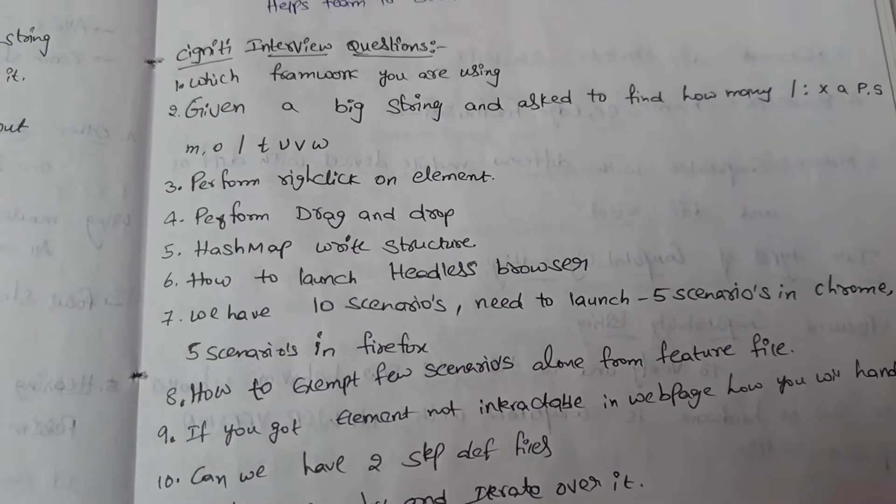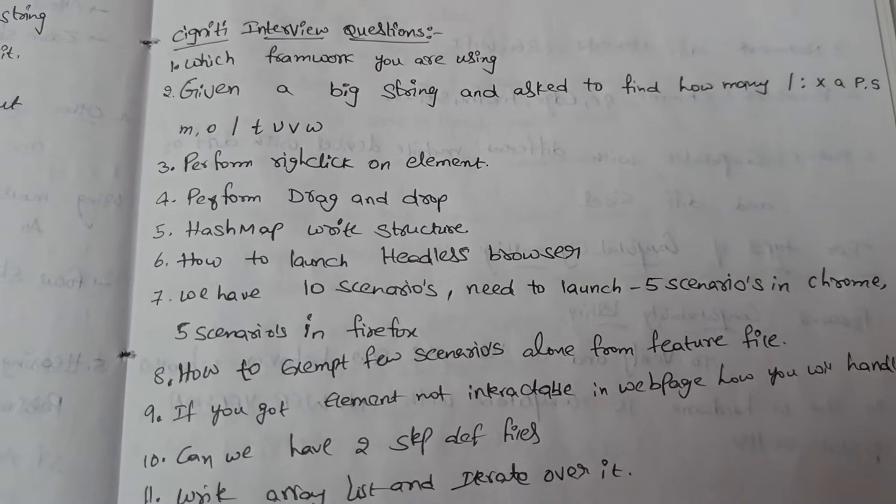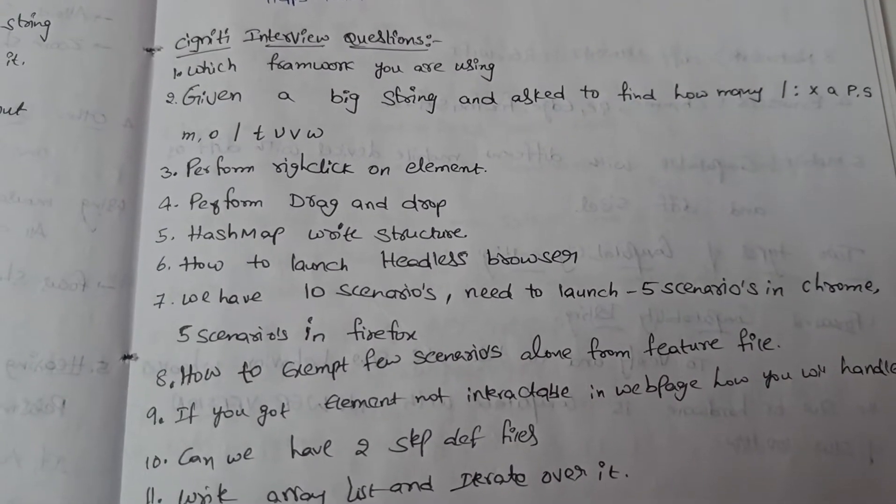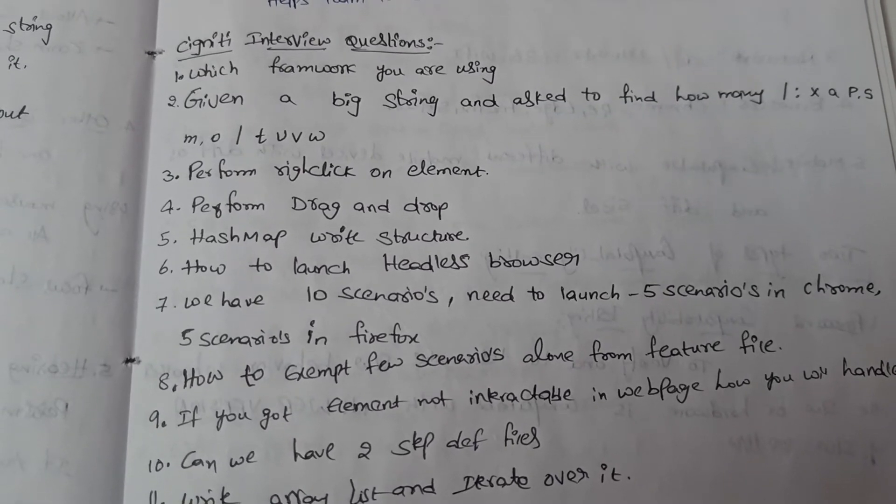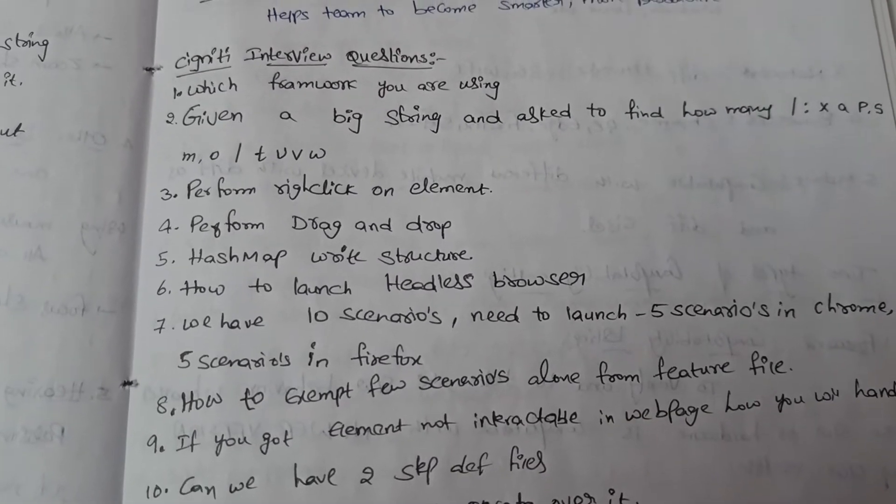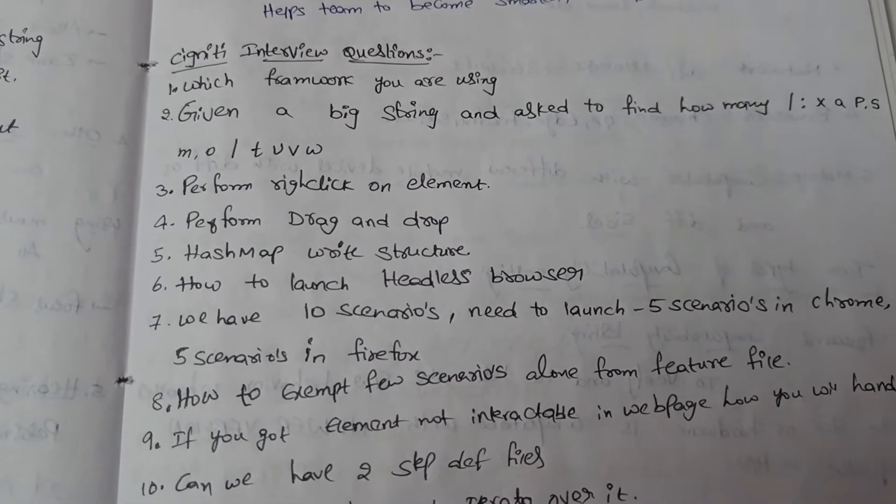The second question is: given a big string that contains around 100 to 120 different types of strings and also alphanumeric characters, and asked me to find occurrence of each character and each alphanumeric value.